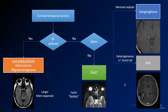The second diagram to focus on is about corticotemporal tumors. If you see a corticotemporal tumor, think about how defined it is. If it's ill-defined, larger, and more expansile, you're probably looking at a low-grade glioma. If it's more well-defined, try to decide whether there's enhancement. If there's none and it's cystic and bubbly, call it a DNET. If you have minimal nodular enhancement — a little nodule — call it a ganglioglioma. If you have more heterogeneous enhancement, maybe a dural tail or an uglier-looking lesion, call it a PXA or pleomorphic xanthoastrocytoma.